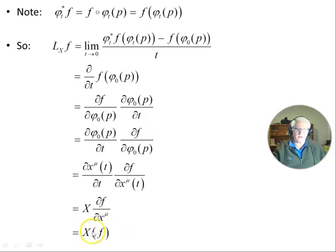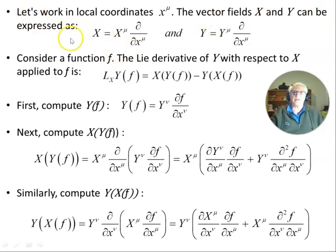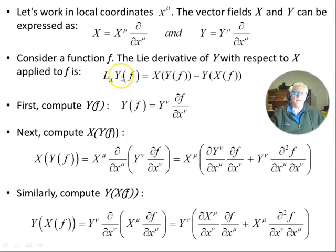The term dx^μ/dt is the tangent vector to the flow line — that's the vector field X acting on the manifold. So we're left with X^μ ∂f/∂x^μ, which is the definition of the directional derivative. The Lie derivative of the smooth function f in the direction of the vector field X is simply the directional derivative X(f) = X^μ ∂f/∂x^μ. Now, working in local coordinates x^μ, both vector fields X and Y can be expressed as X = X^μ ∂/∂x^μ and Y = Y^μ ∂/∂x^μ.